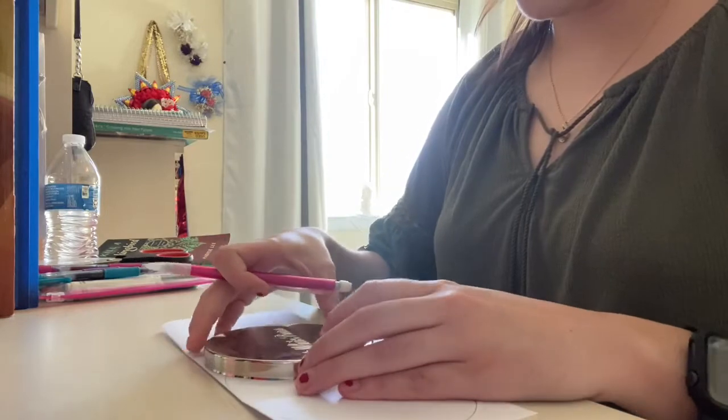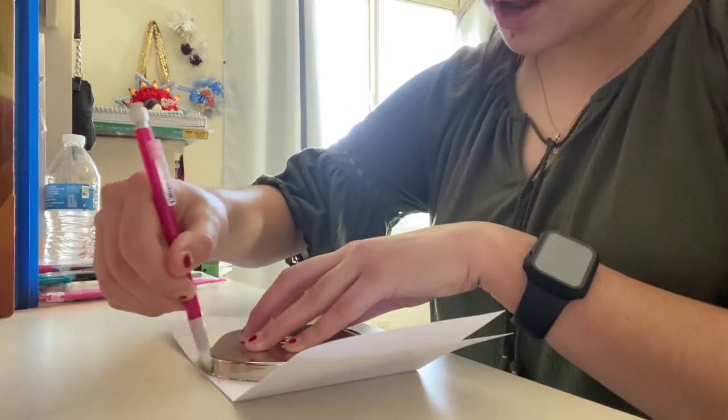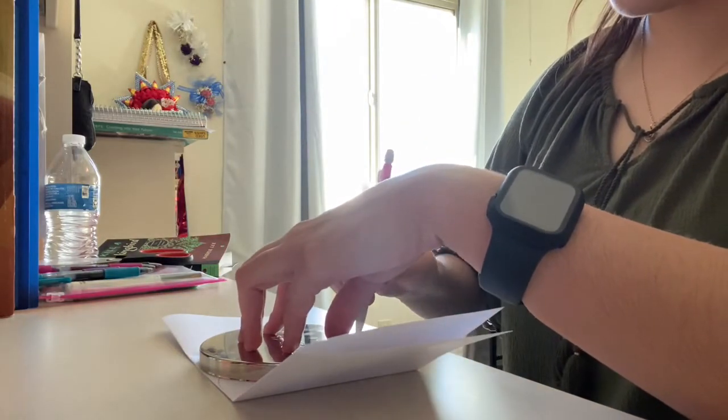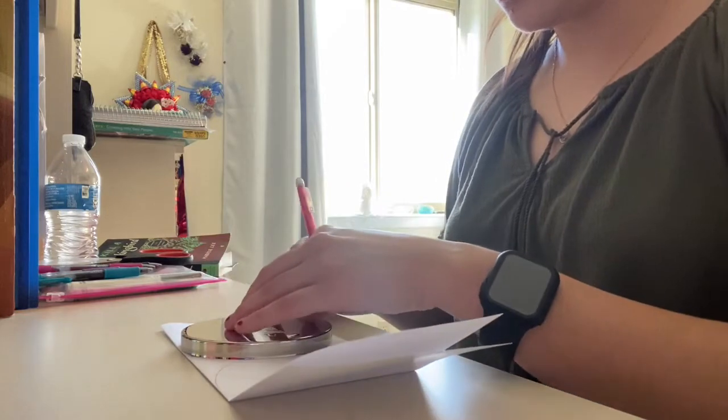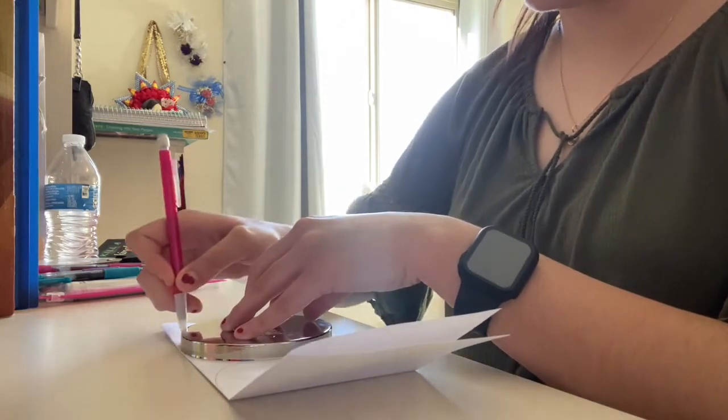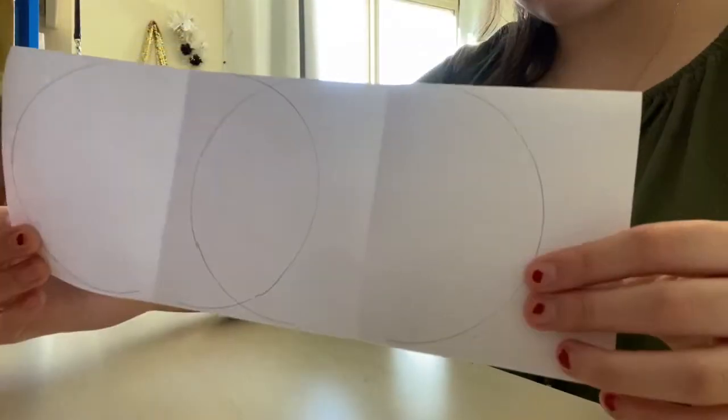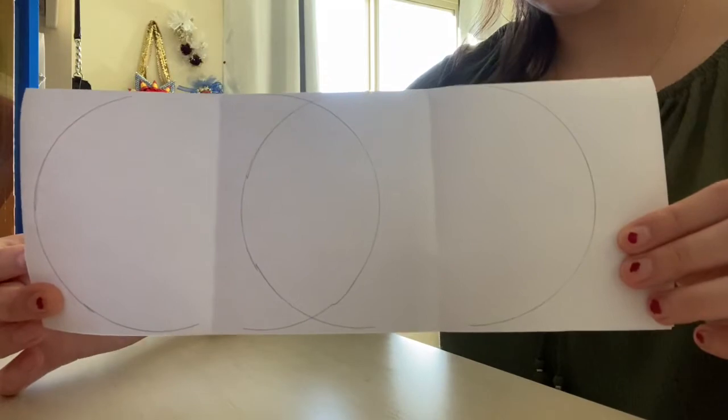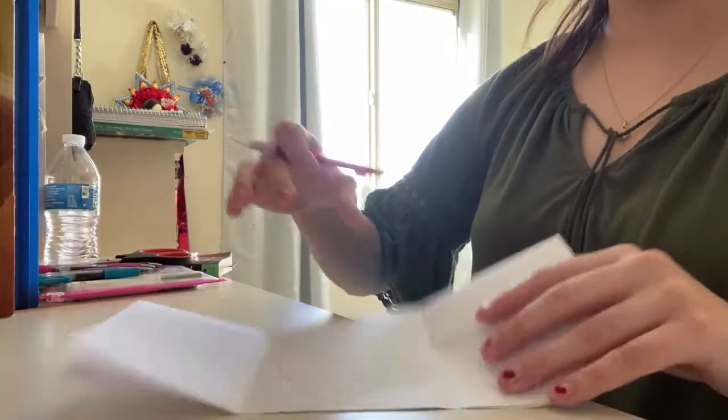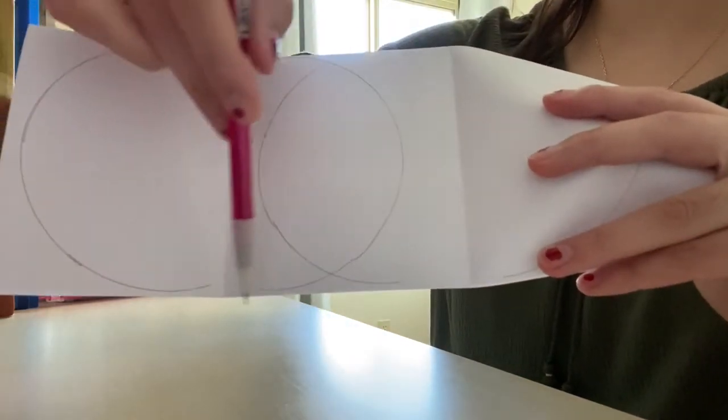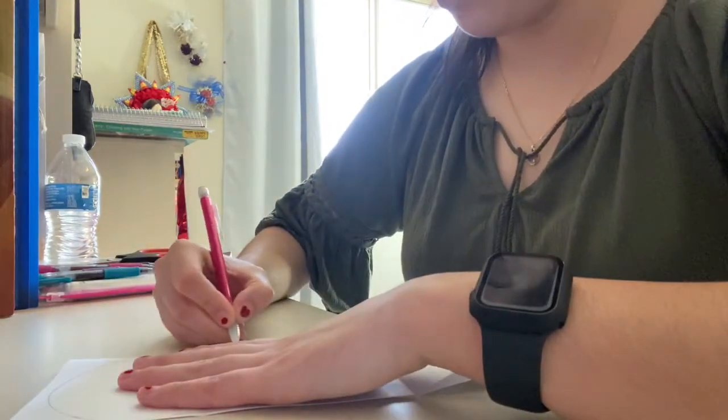So you're going to repeat this process twice, only to trace half of the circle with whatever tool you're using. You can definitely freehand it, it just depends how neat you want your circles to come out. So here we have the two oval-looking structures. What you can do is you can just connect the lines real quick where you stop drawing, just so it looks nice and whole.